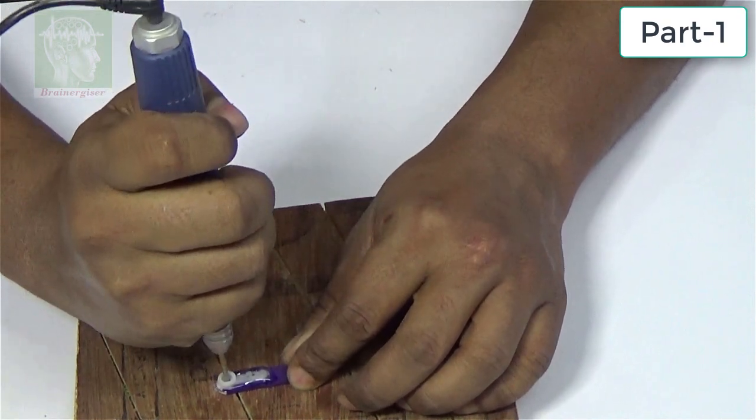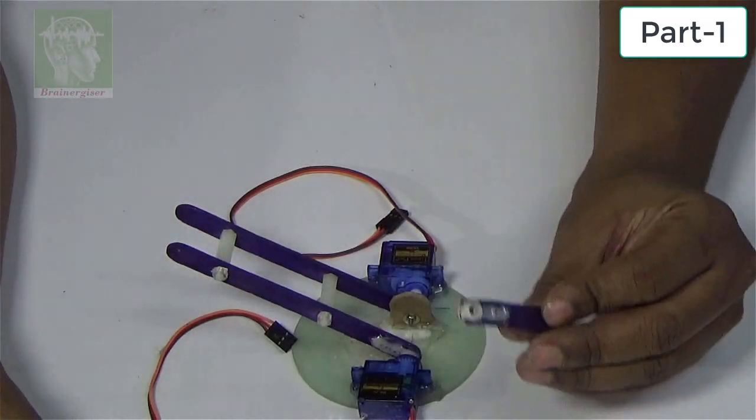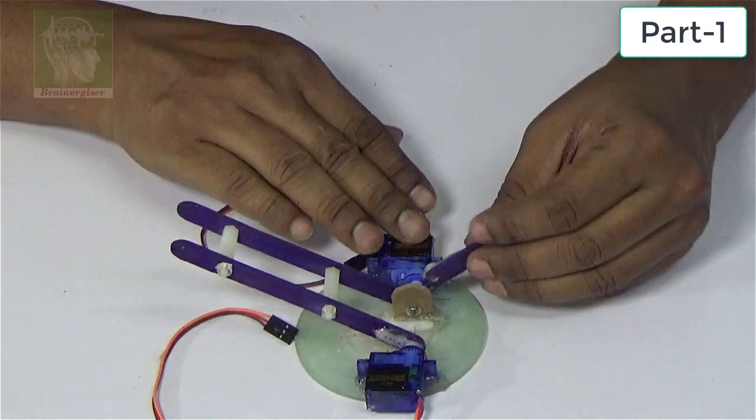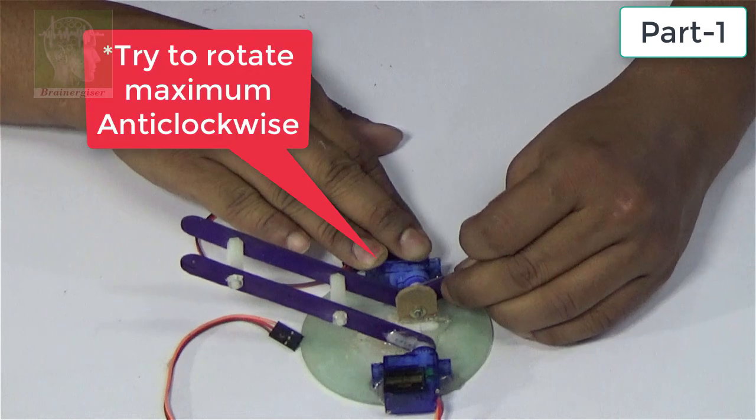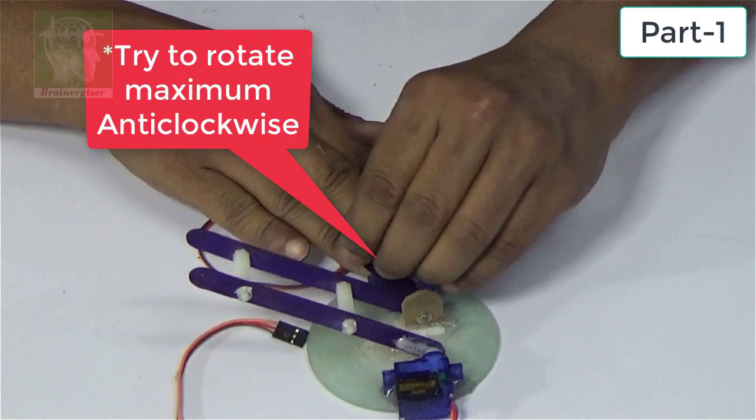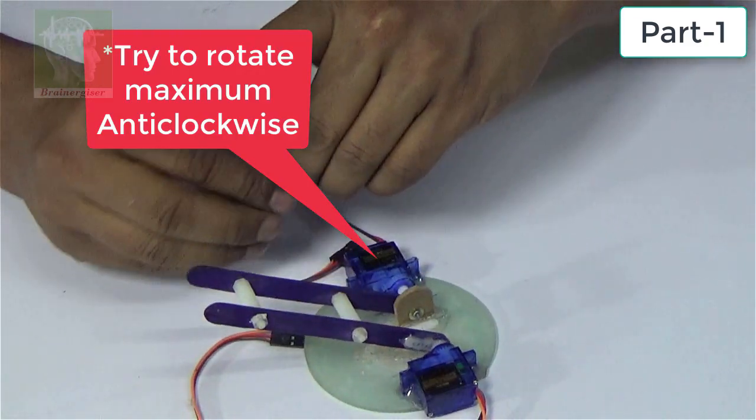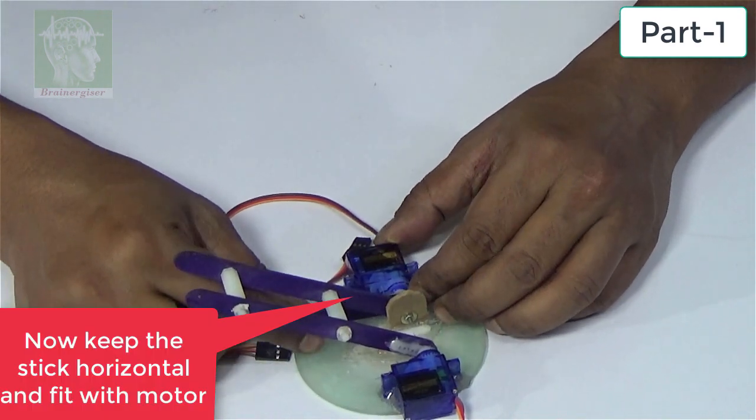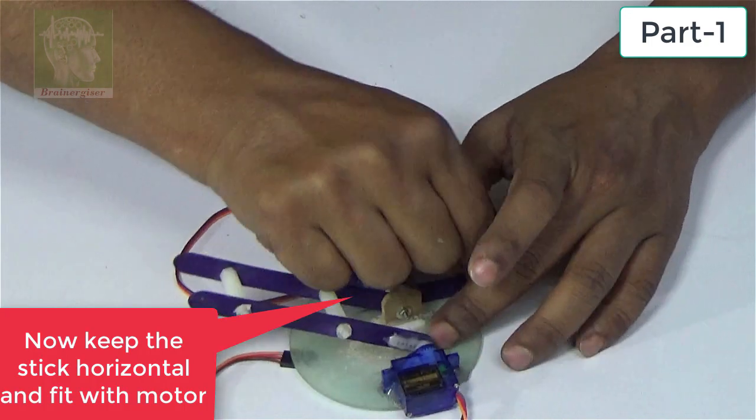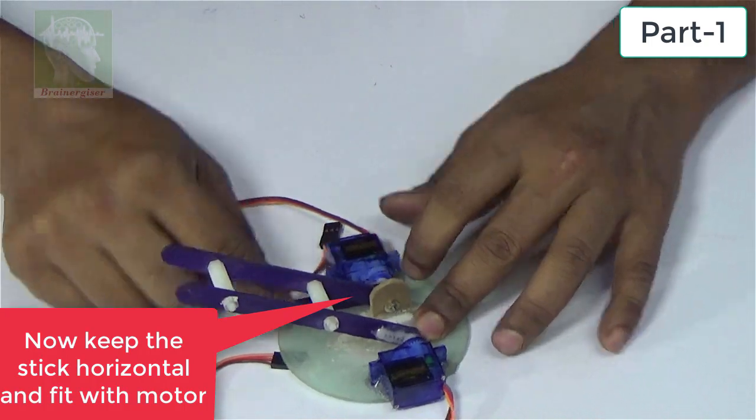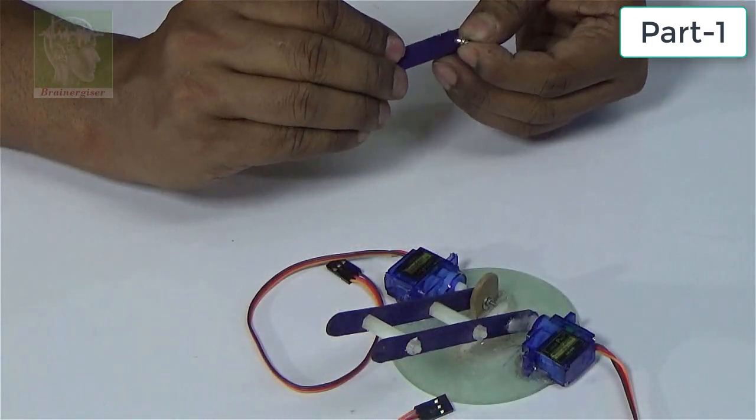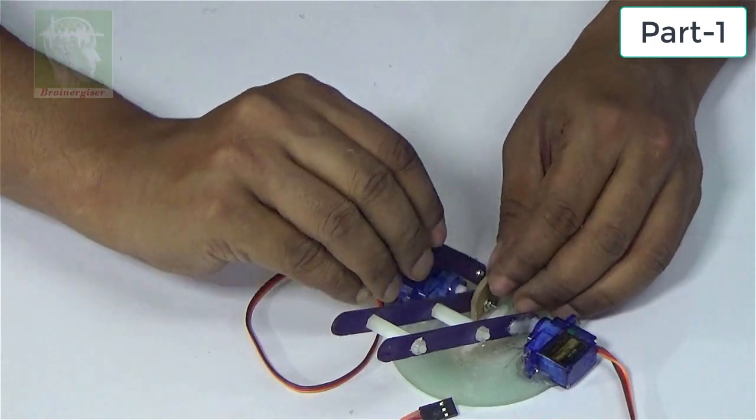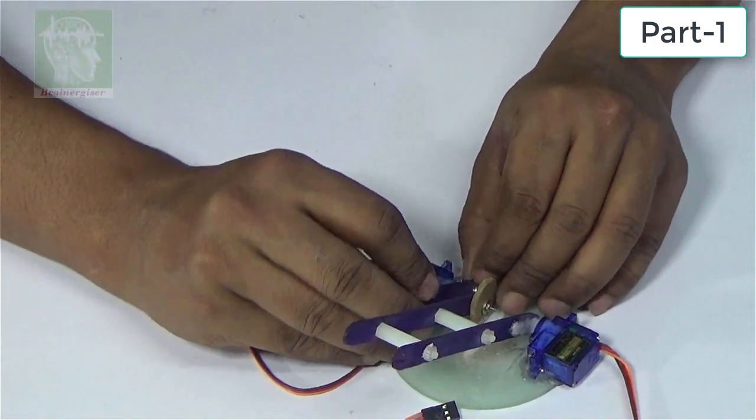Same way you insert this into the servo and rotate it to its maximum to the zero point. Then open it, make it horizontal and push it back again. Then tighten it with the servo motor using the screw. Here there's very limited space, so you cannot use a screwdriver. I'm going to use a nose plier.